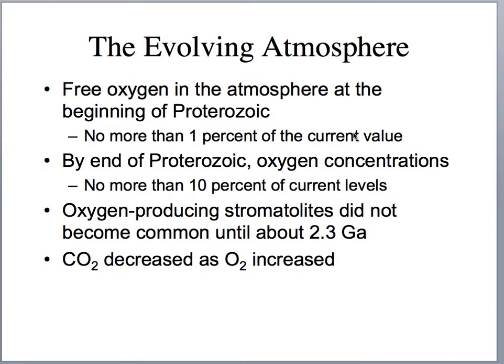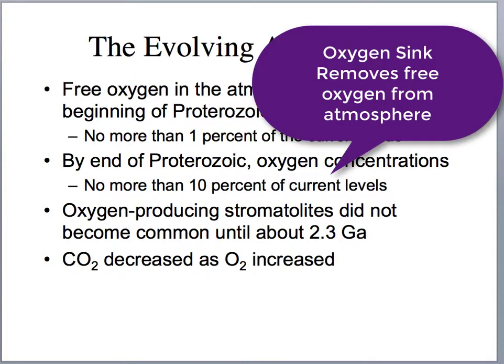Now let's look at this evolving atmosphere. At the beginning of the Proterozoic, there was no more than 1% free oxygen compared to today's levels — pretty low concentrations. By the end of the Proterozoic, oxygen concentrations were no more than 10% the current value. One of the things we find in terms of evidence of what's happening to all this oxygen — because there's photochemical dissociation and photosynthesis occurring — is that we have an oxygen sink, and oxygen sinks are removing the free oxygen from the atmosphere.